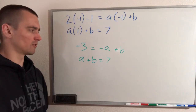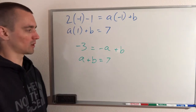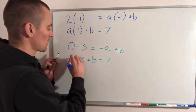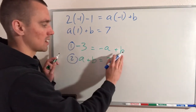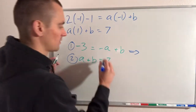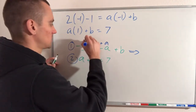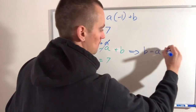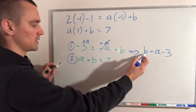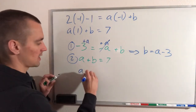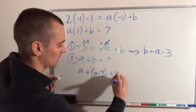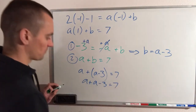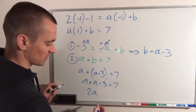There are a couple of ways to solve a system of equations like this. I'm going to use the substitution method — we solve one equation for one variable and plug it into the other. Taking the first equation, we solve for b by adding a to both sides, which gives b = a − 3. Now we substitute a − 3 in place of b in the second equation: a + (a − 3) = 7. Combining like terms gives 2a − 3 = 7, and adding 3 to both sides gives 2a = 10.